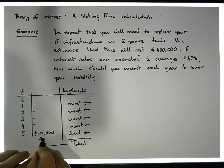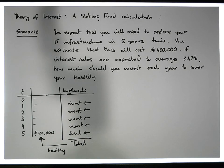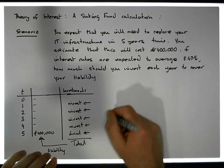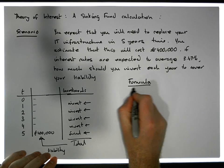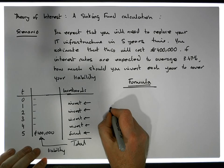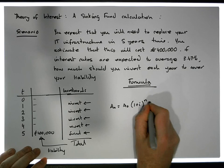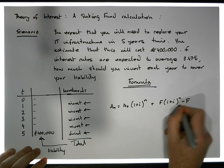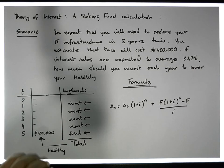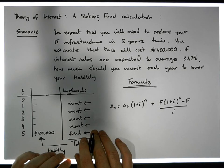The question is: what should these particular investments be at the end of each year so that the total will meet this particular liability? We're going to use our mortgage sinking fund annuity formula to solve this problem. The formula says: A_n equals A_0 times (1 + i) raised to the power of n, plus f times (1 + i) raised to the power of n minus f, divided by i.